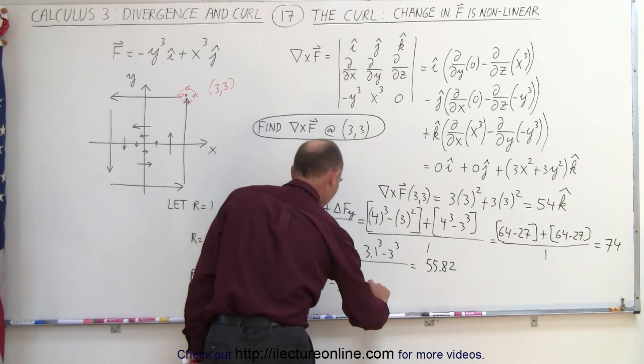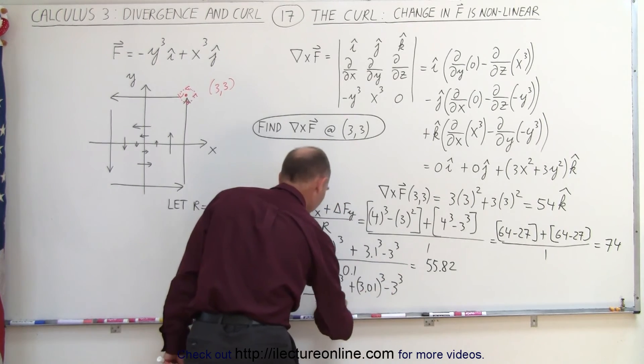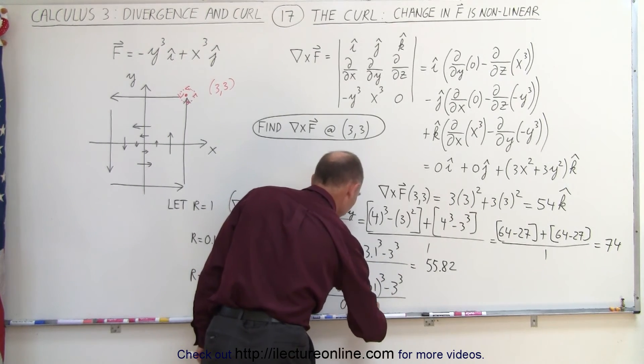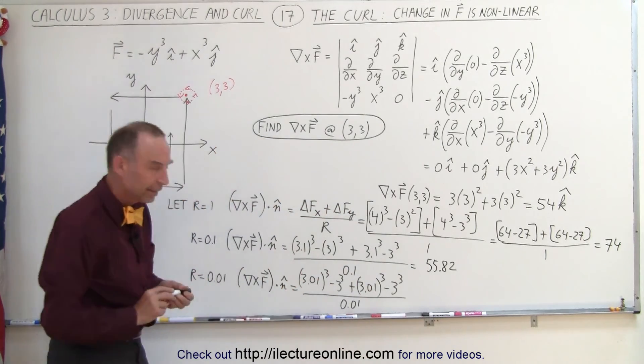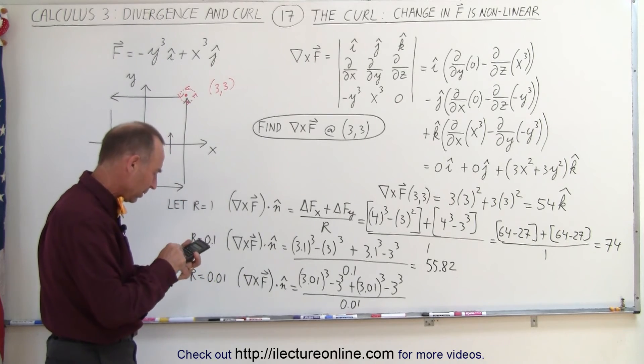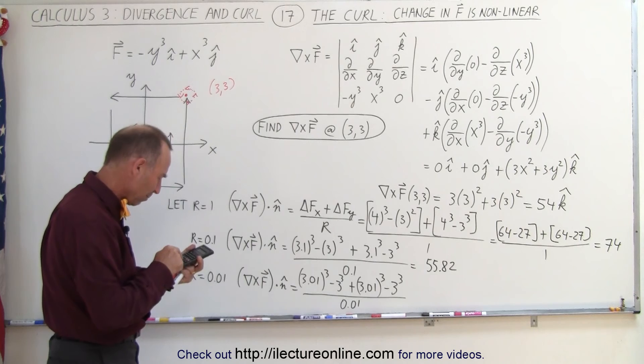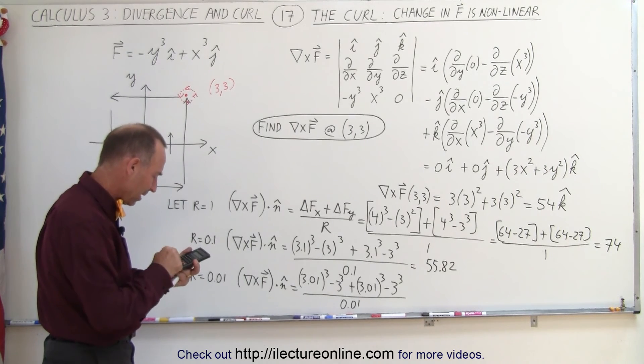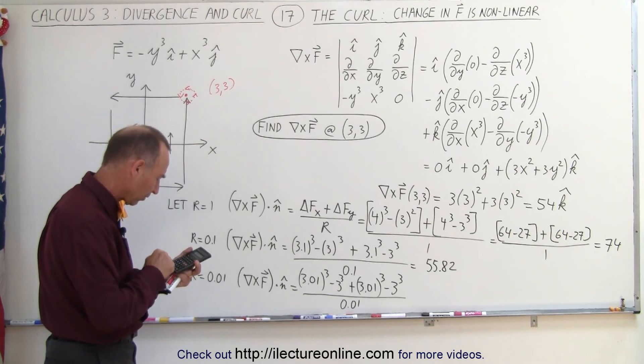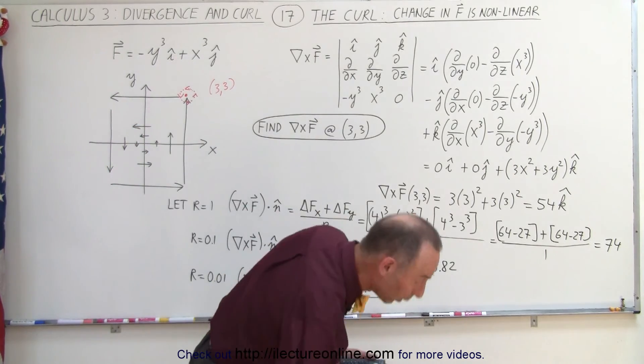So this now becomes 3.01 cubed minus 3 cubed, and I do it again, plus 3.01 cubed minus 3 cubed, and divide the whole thing now by the amount of movement, which is 0.01. Let's see how close we get to 54 this time. So 3.01 cubed minus 27, multiply the times 2, and divide by 0.01 equals, and now we get 54.18.